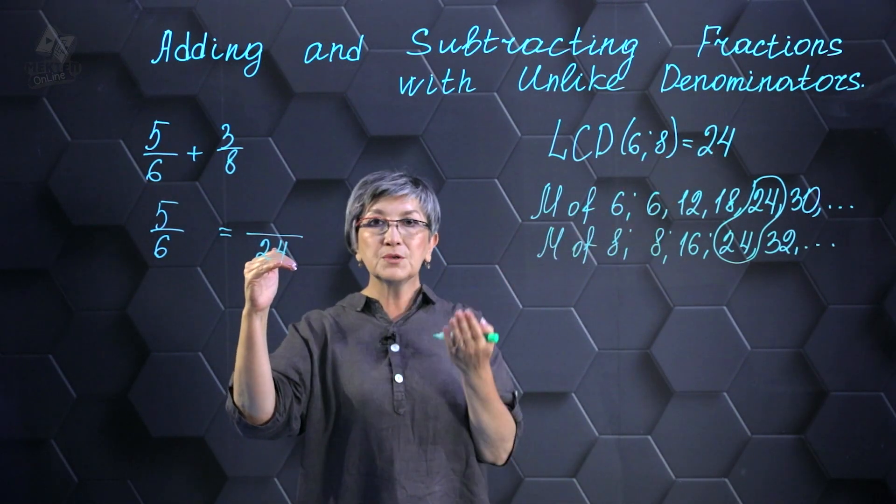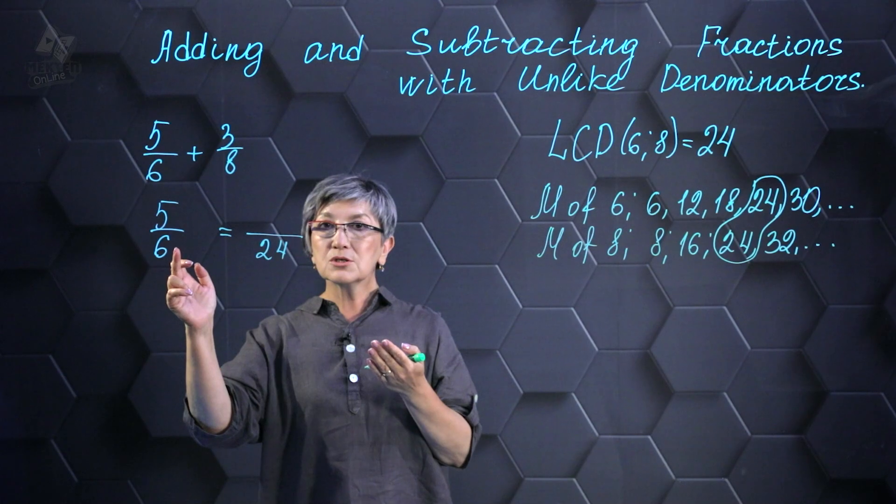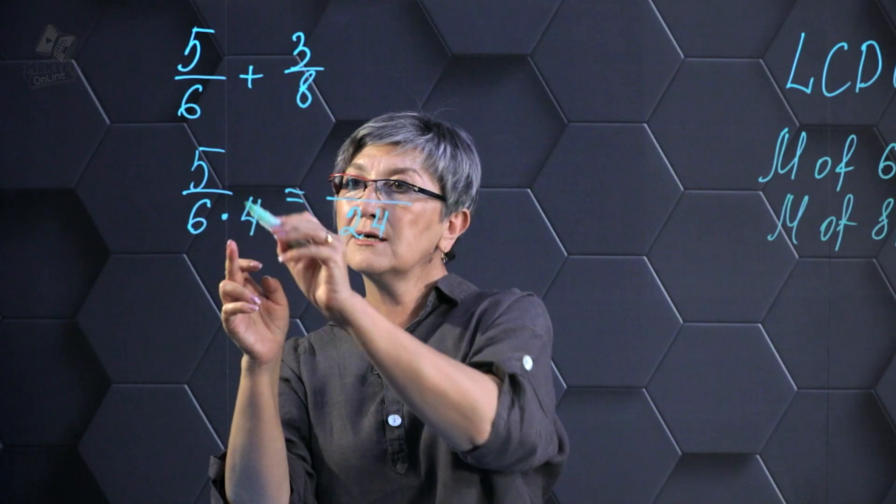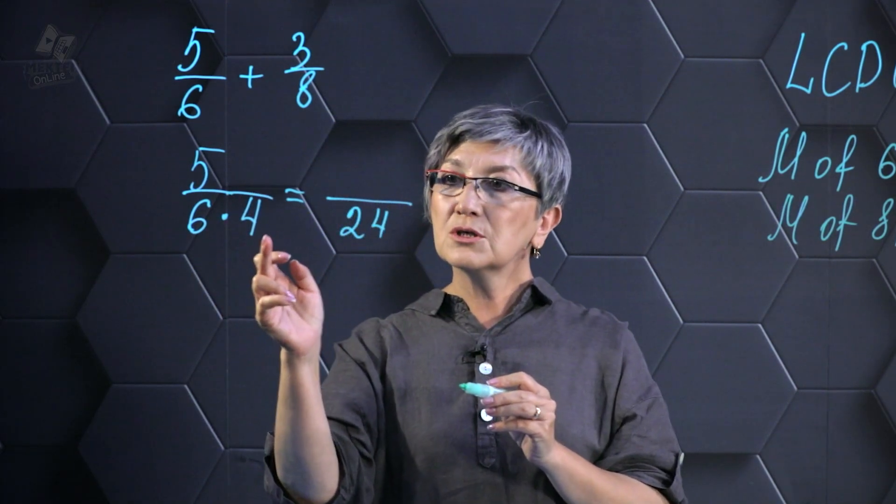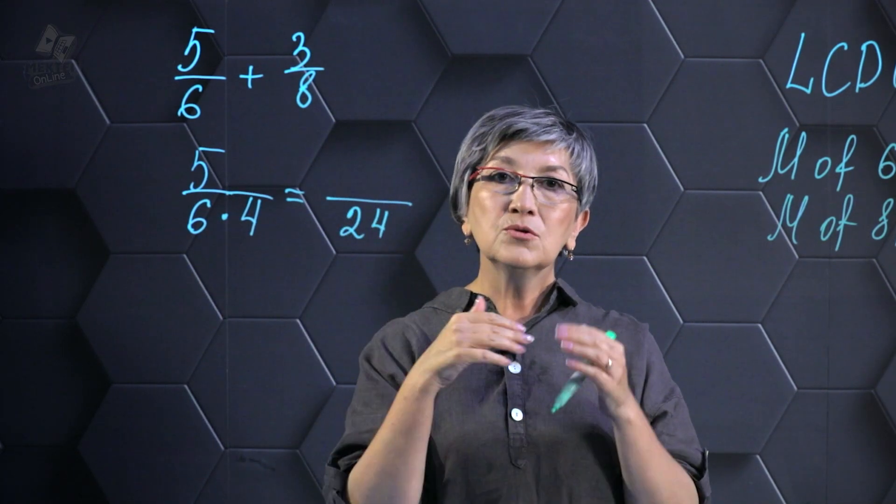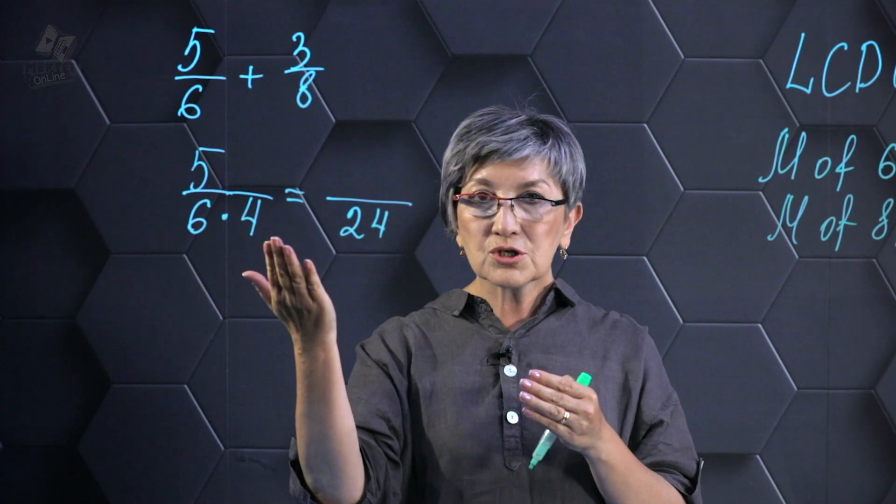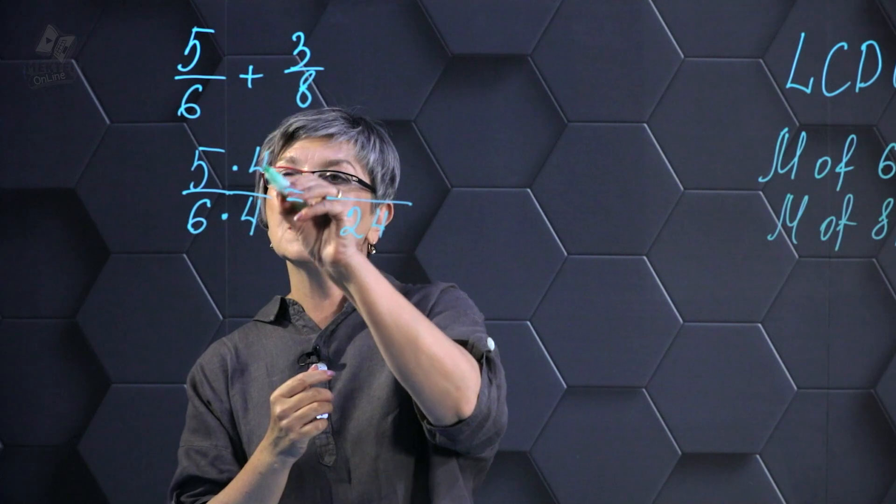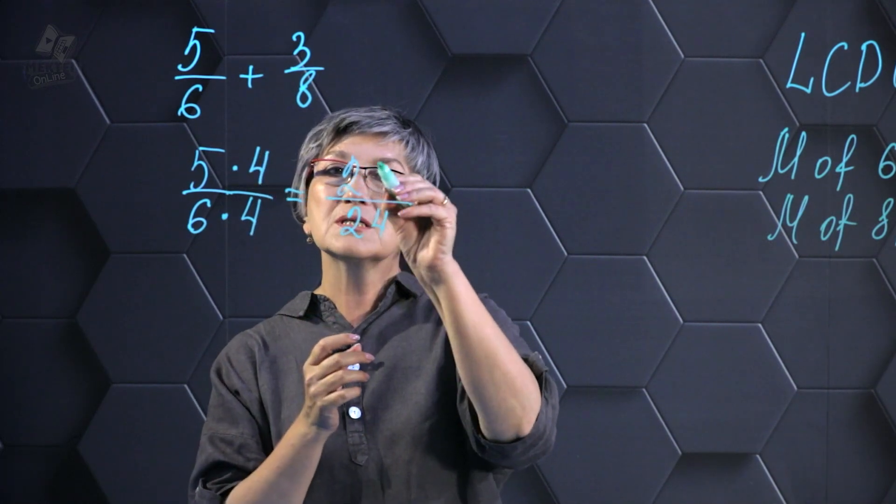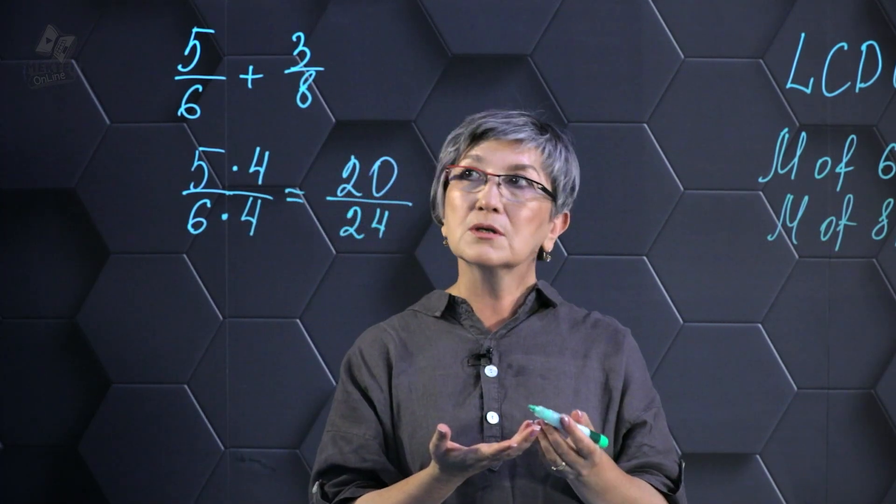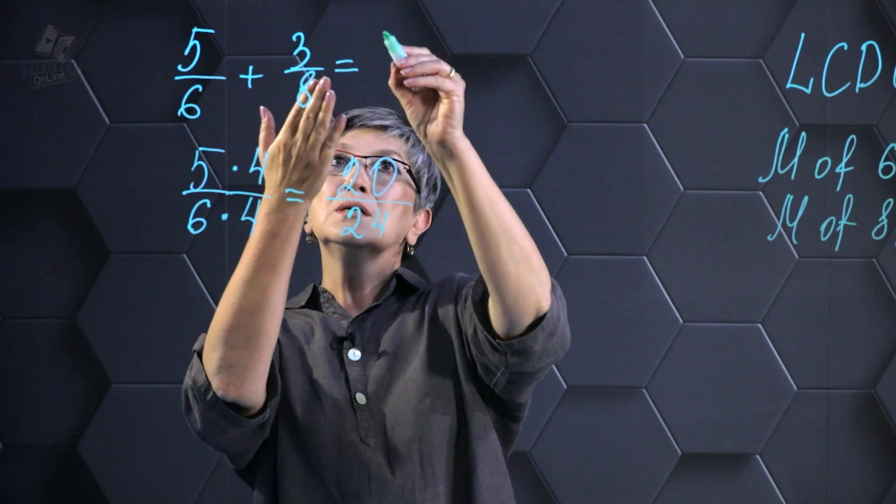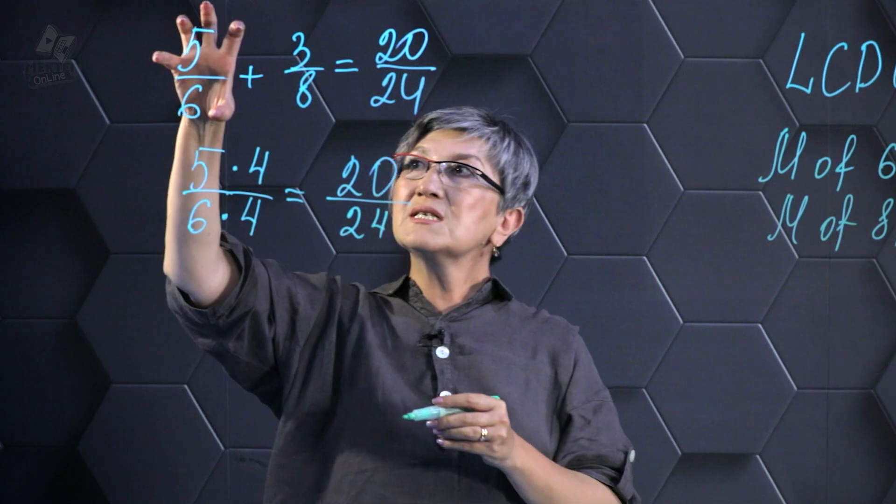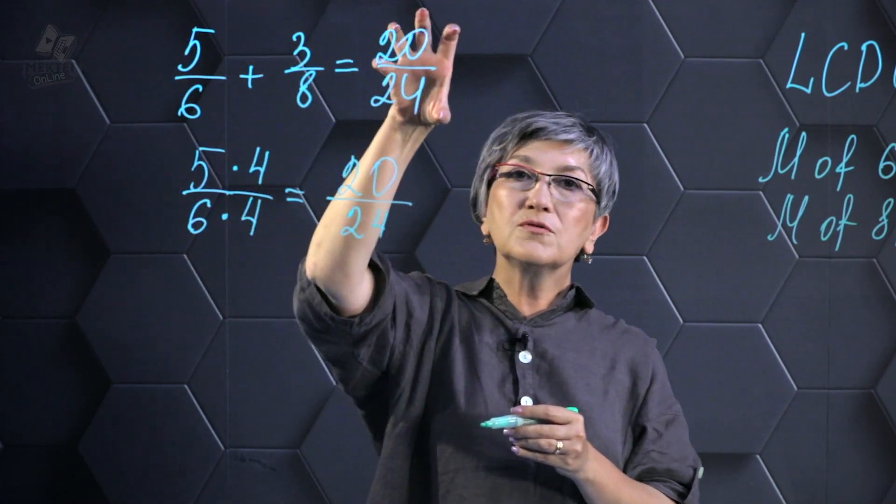I need 24. What should I multiply 6 by? I should multiply by 4. If you multiply by 4, it will be 24. But if I multiply the bottom by 4, then here I should also multiply the numerator. And then I get 20. 20/24. Instead of 5/6, I'll write 20/24.